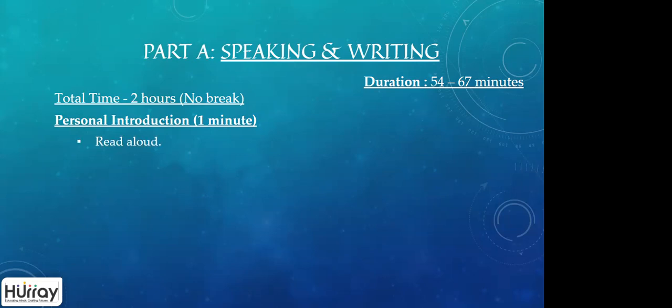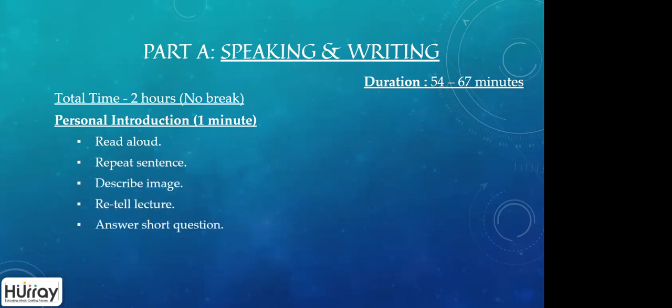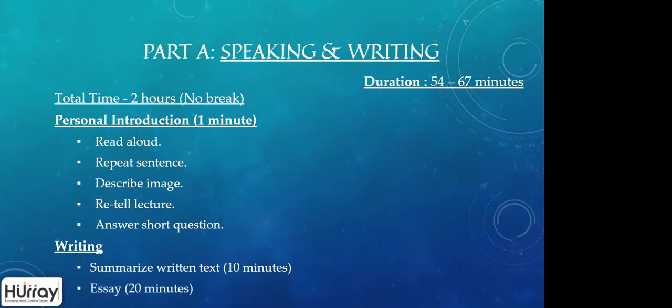In speaking, there are five kinds of questions: read aloud, repeat sentence, describe image, retell a lecture, and answer short question. For writing, there are two tasks: summarized written text, which is a 10-minute task, and essay writing, which is a 20-minute task. Speaking and writing together form Part 1, with a duration of 54 to 67 minutes.